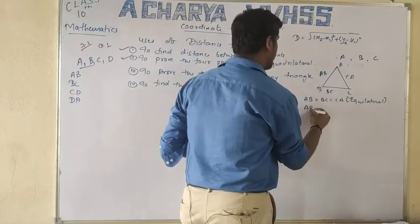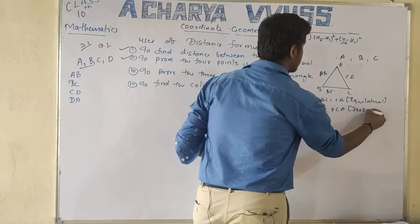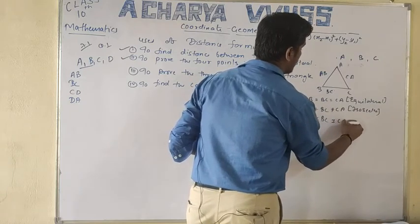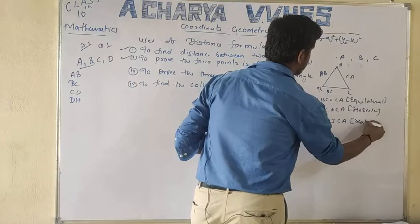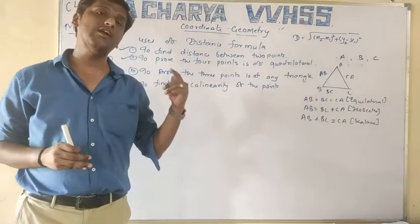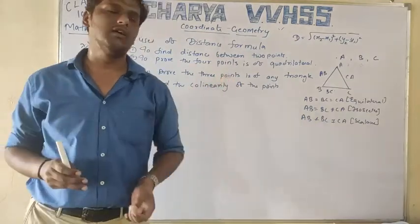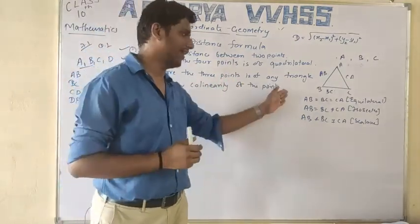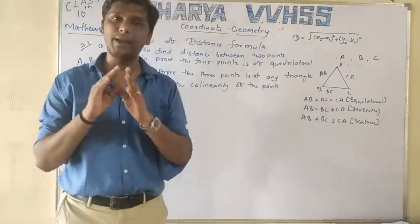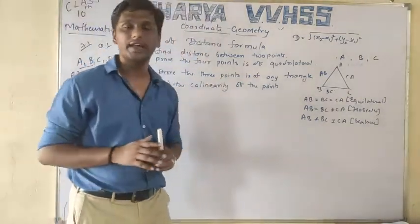If two sides are equal, then I will say it is an isosceles triangle. If no sides are equal, then it is a scalene triangle. This example we will do.